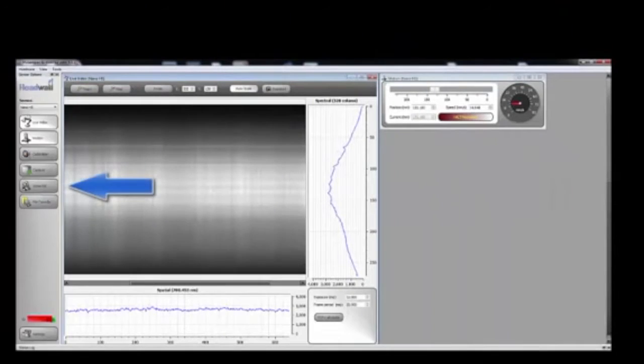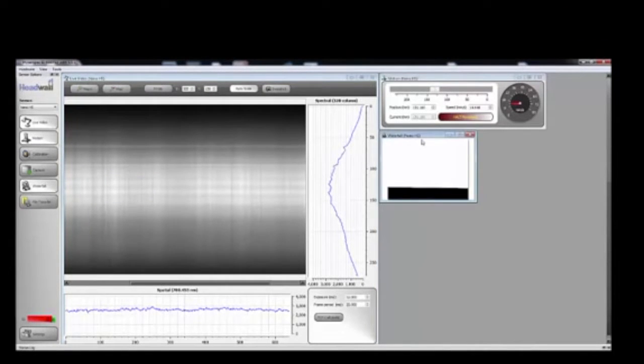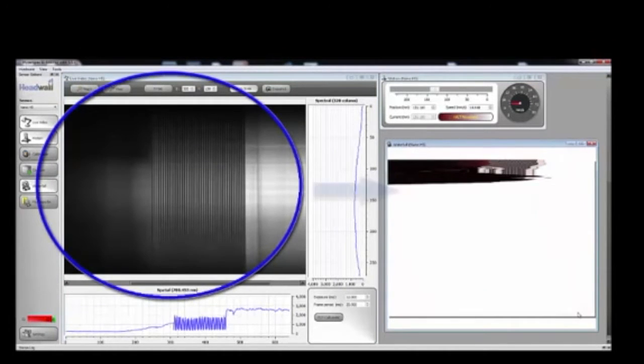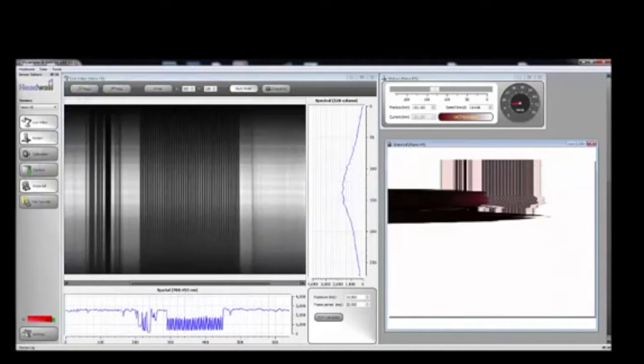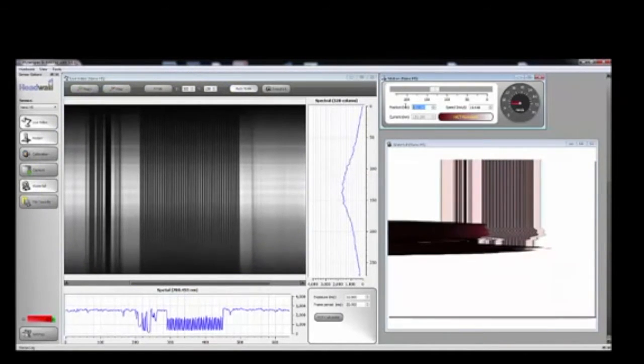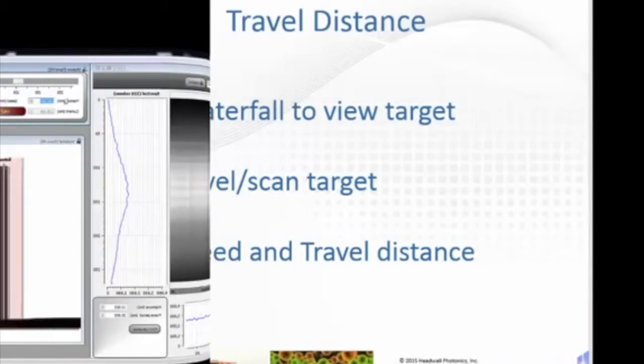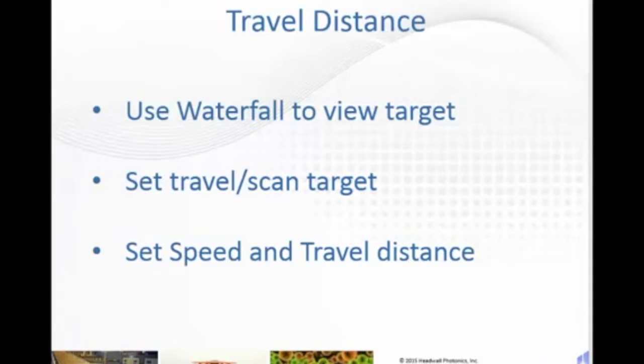Click the waterfall button to open that feature. Notice the waterfall displays the same as the live video. Next, we'll use the waterfall display to scan the target. As we scan, we'll be setting the travel speed as well as the distance.